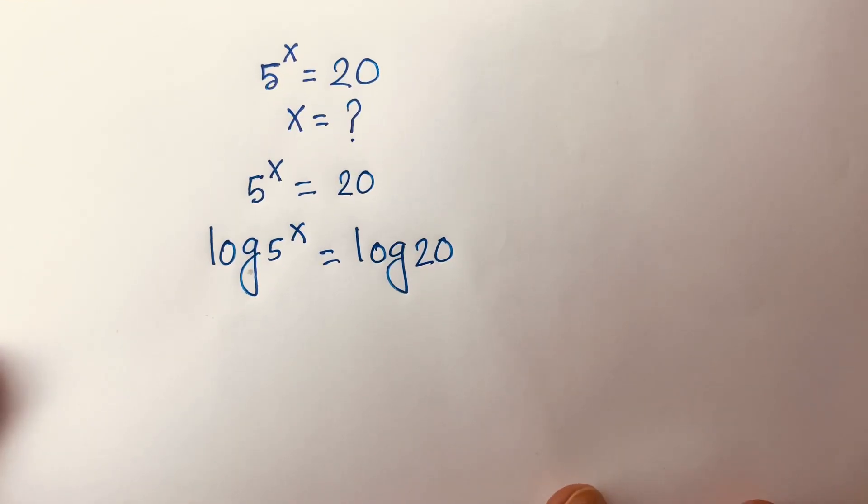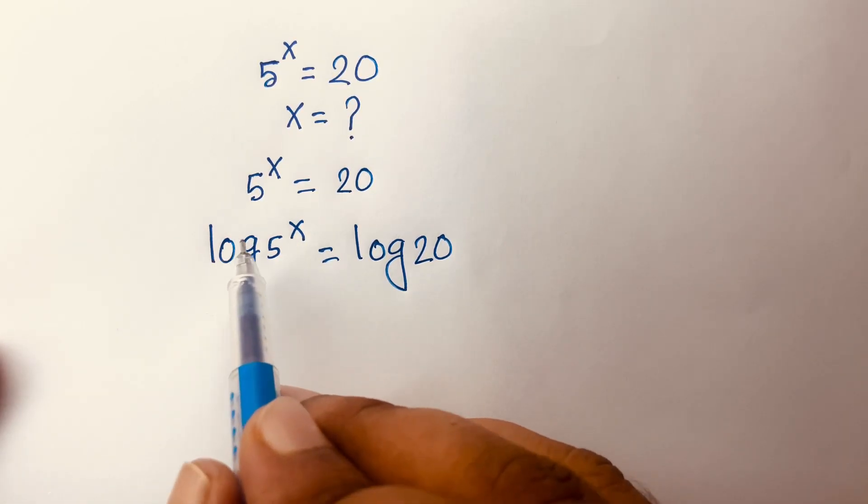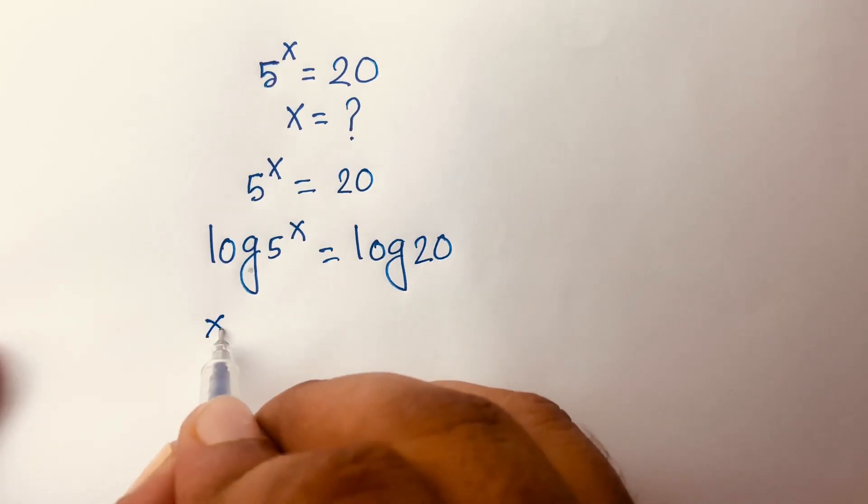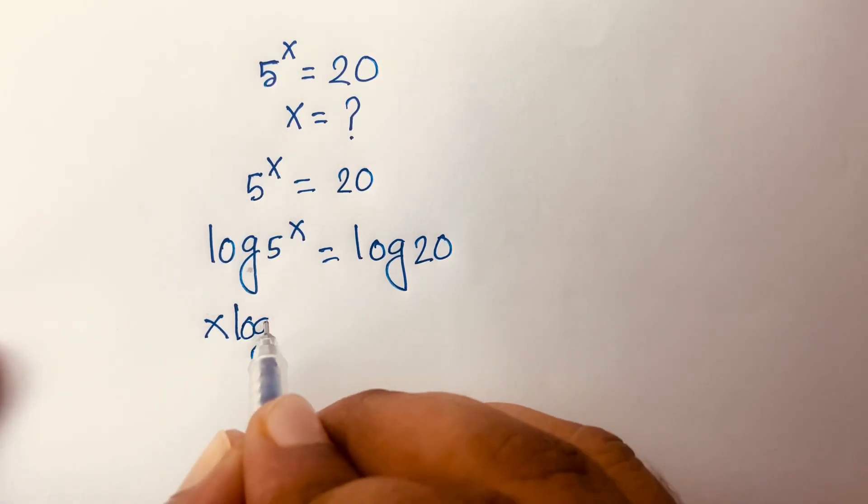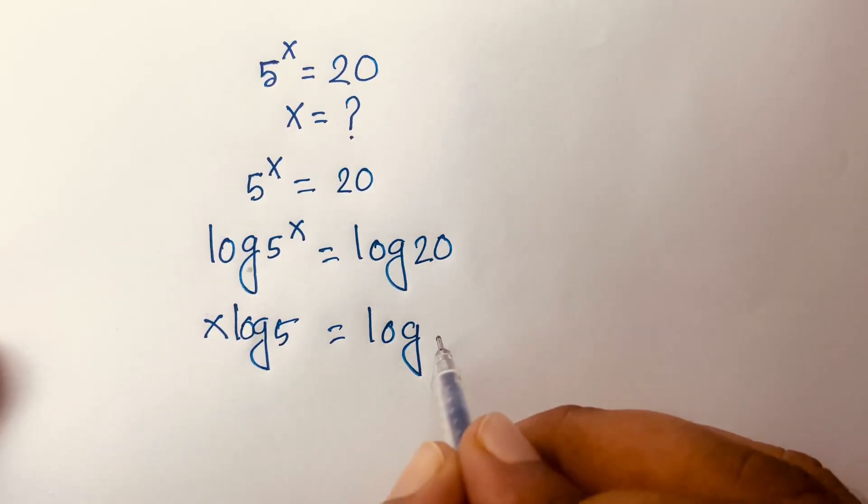Then we know that this exponent moves to the front because of that. Here is log, so it will be x·log5 = log20.